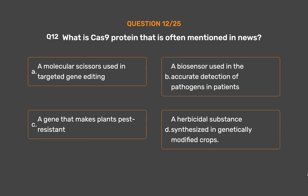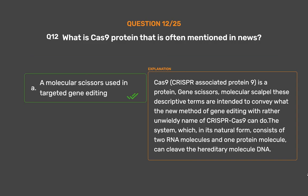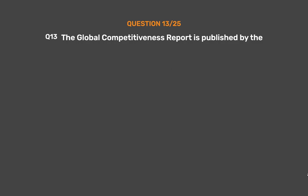The correct answer is Option A: A molecular scissors used in targeted gene editing. Cas9 (CRISPR-associated protein 9) is a protein — also called gene scissors or molecular scalpel — intended to convey what the new method of gene editing known as CRISPR-Cas9 can do. The system, which in its natural form consists of two RNA molecules and one protein molecule, can cleave the hereditary molecule DNA.